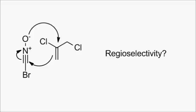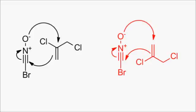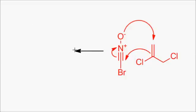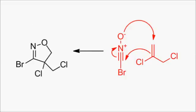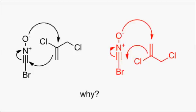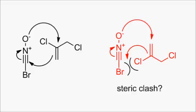We should give some thought to the regioselectivity of this reaction, because there's a second, equally plausible transition structure we could draw, which would give an isoxazole with a different regiochemistry. Maybe there's a steric clash between the chloride and an admittedly large bromine atom, or perhaps the inductive effect of chloride renders one end of the double bond more electrophilic and prone to attack by the oxyanion.